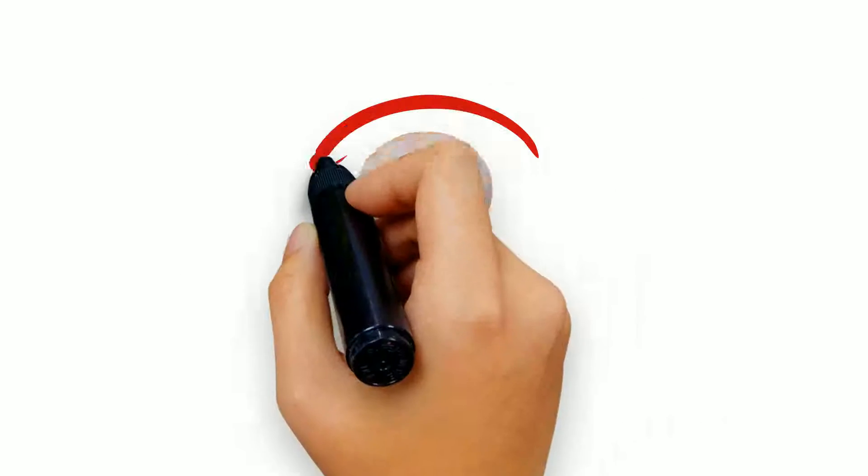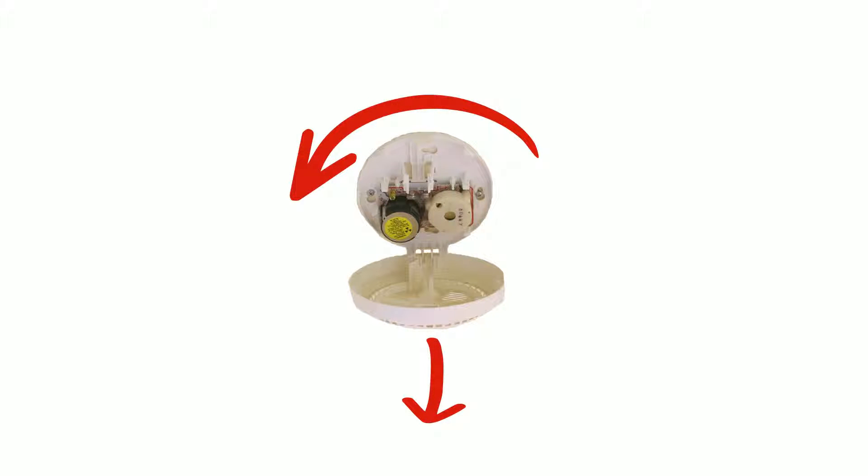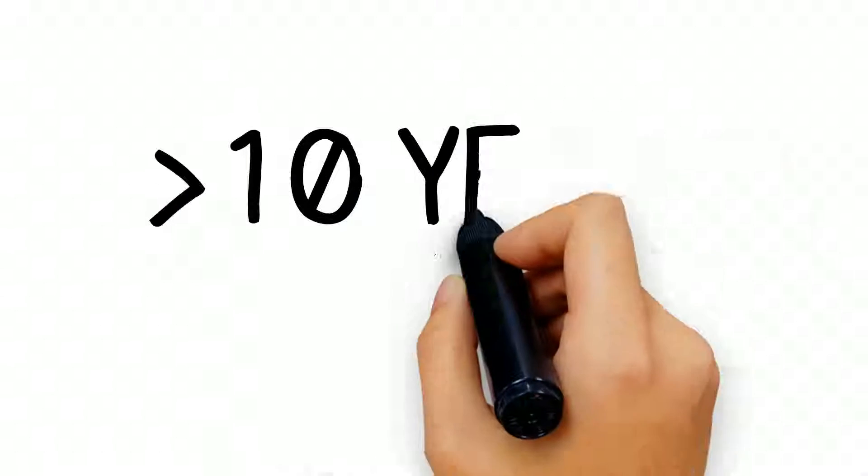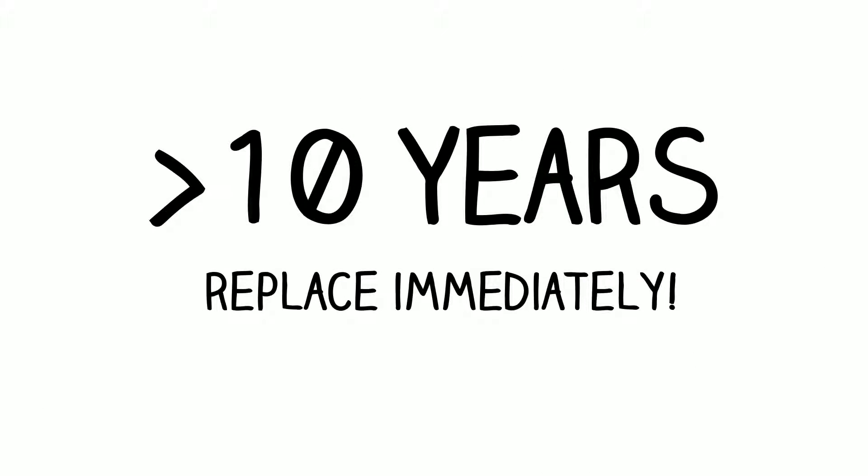To check the expiration date, twist your alarm and pull it down gently. On the back of your alarm you'll see a date either stickered or stamped on there. If it's been longer than 10 years, it's time to replace it immediately.